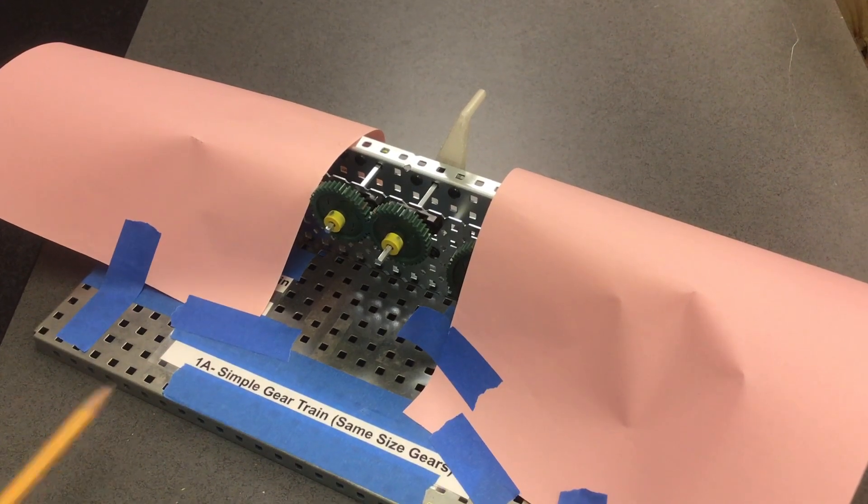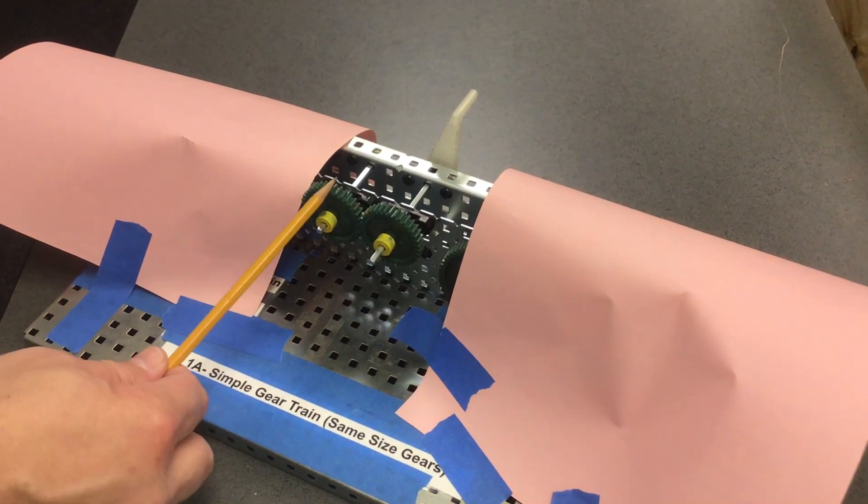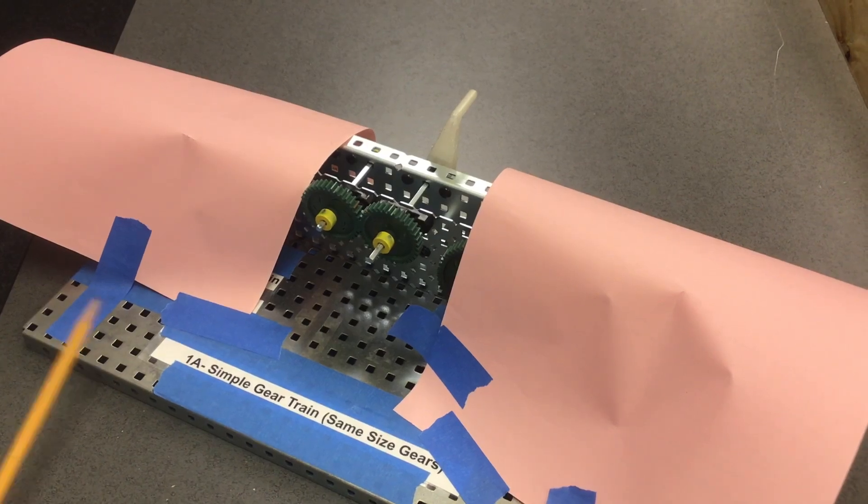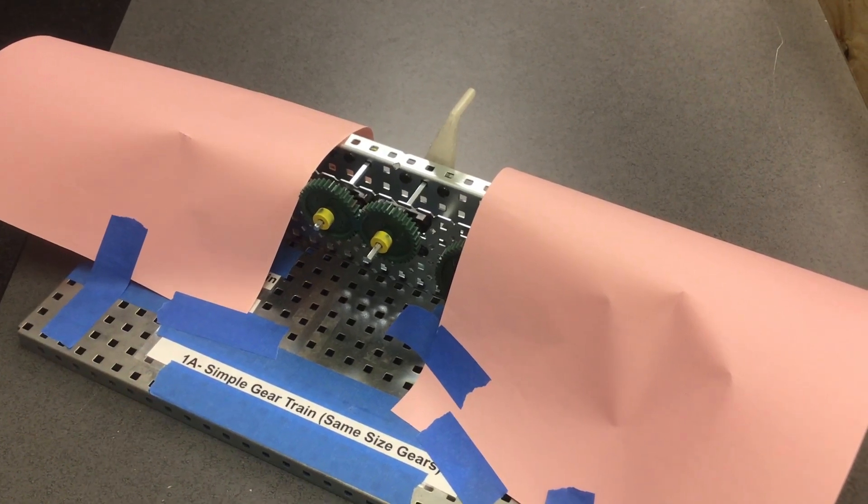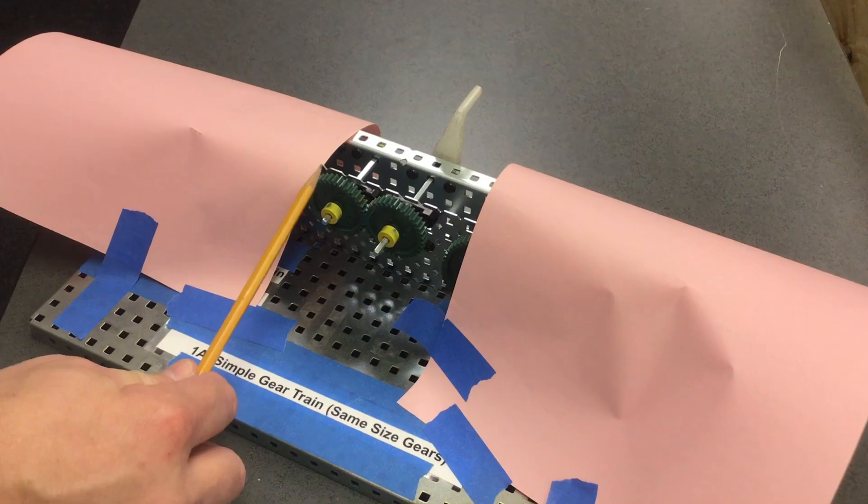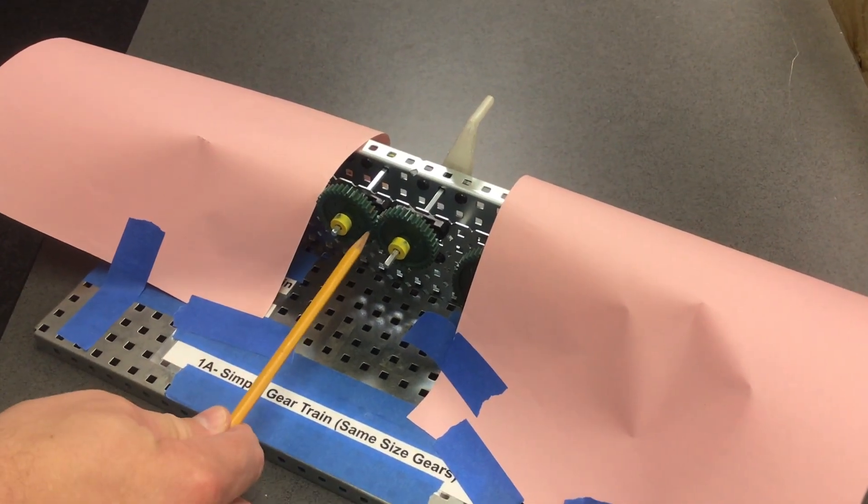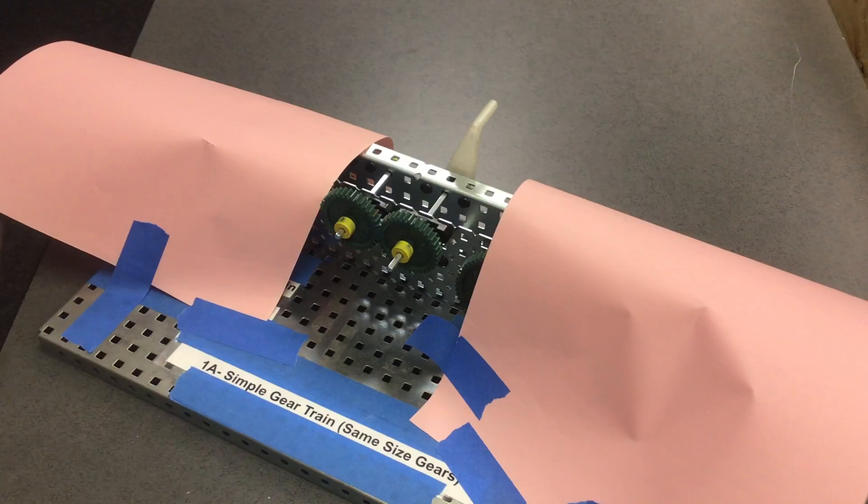This mechanism is a simple gear train with two gears that are the same size, gear train A. Let's talk about the relationship of these two gears. Notice that they are both touching and there's only two gears.